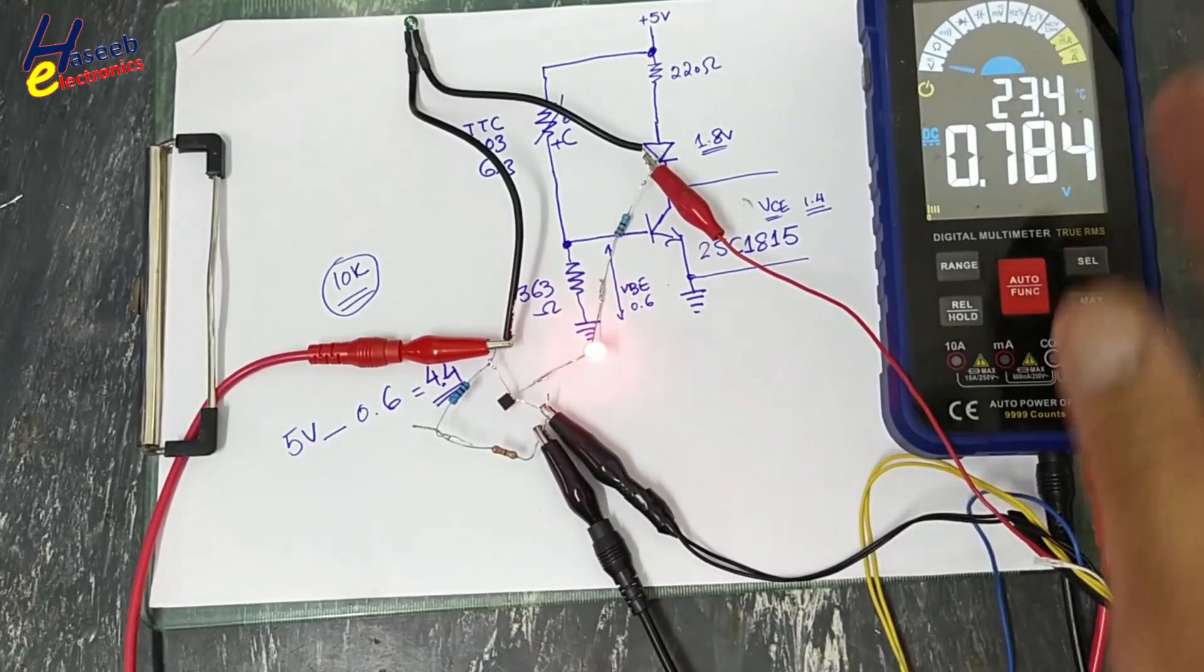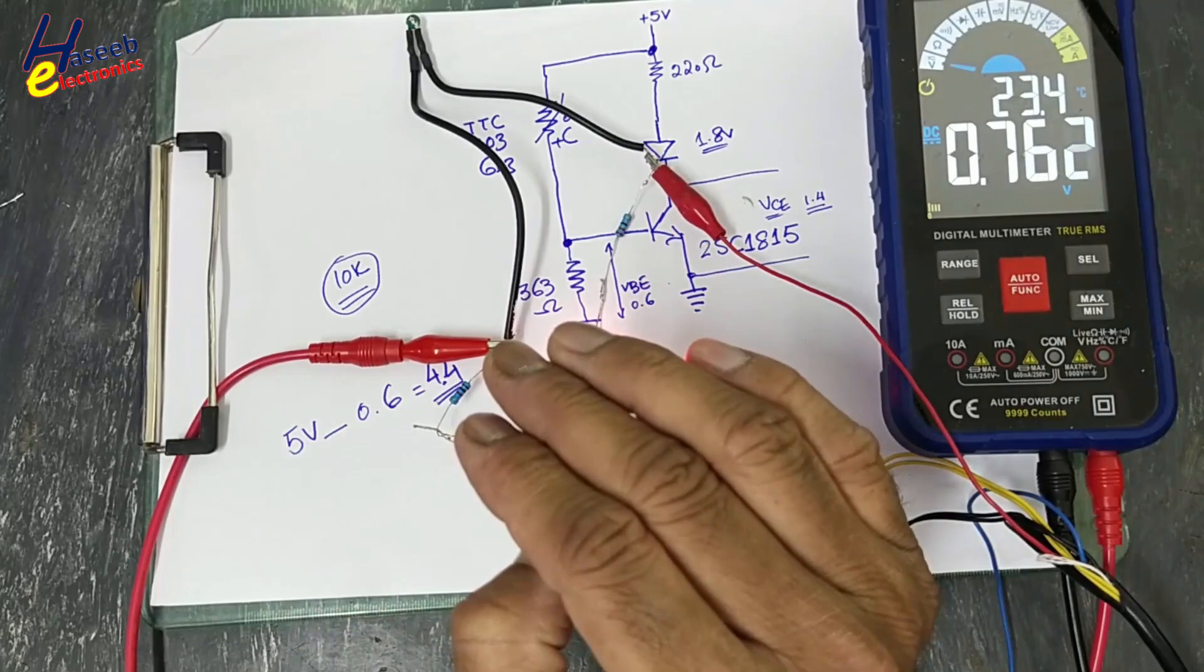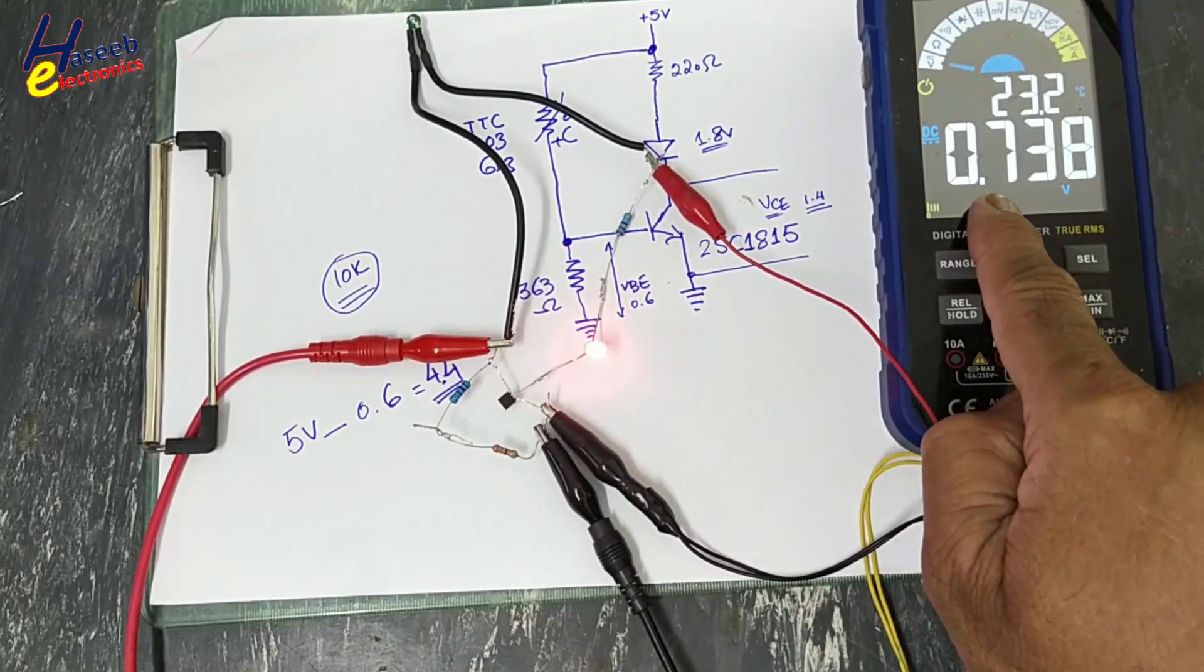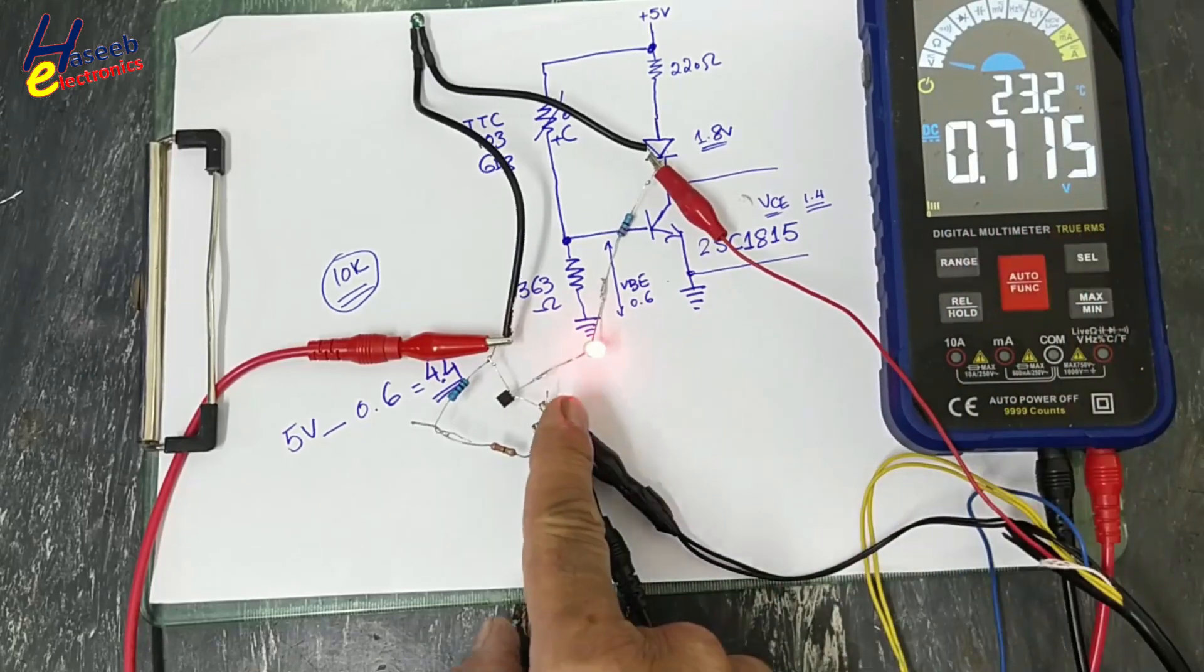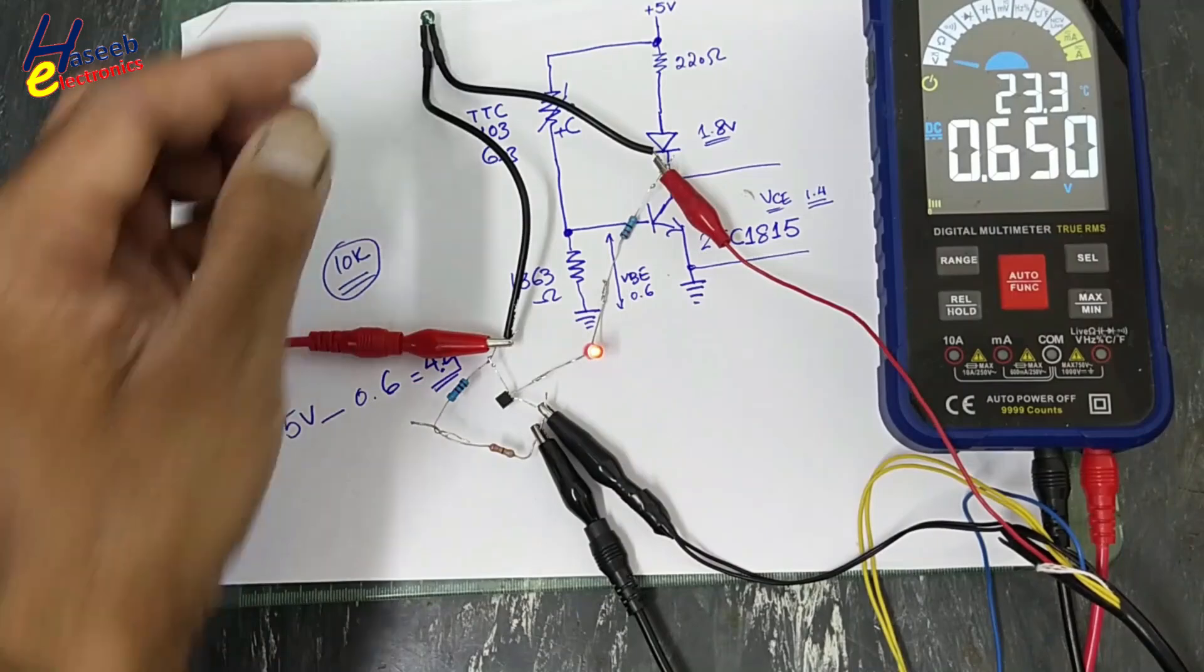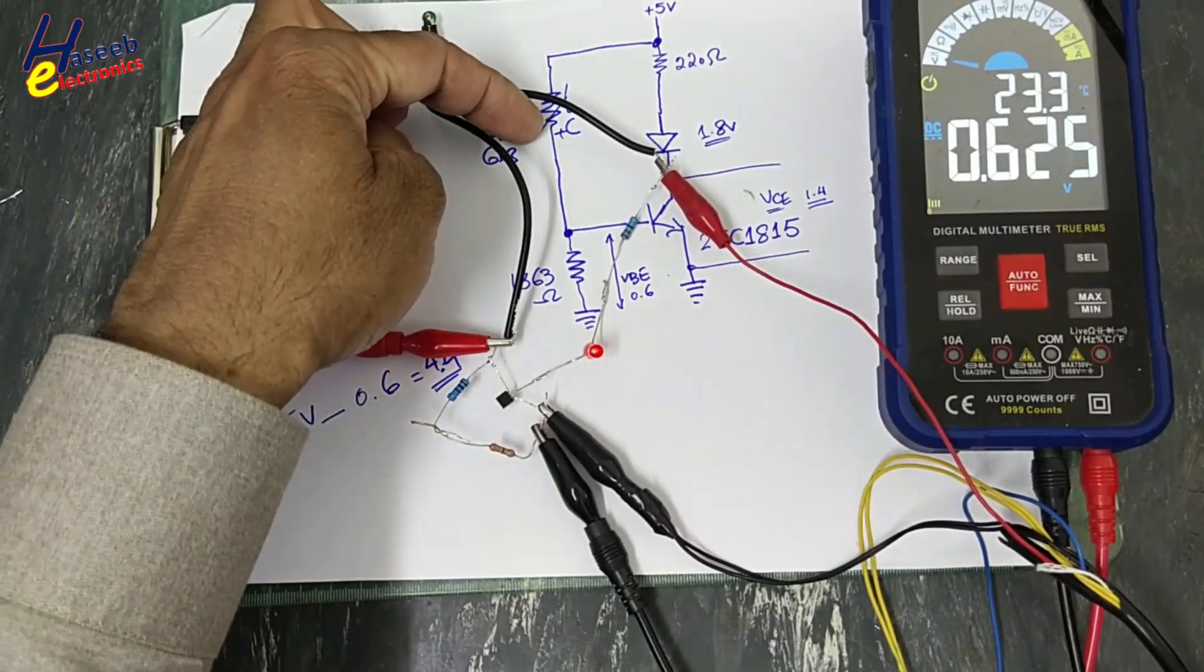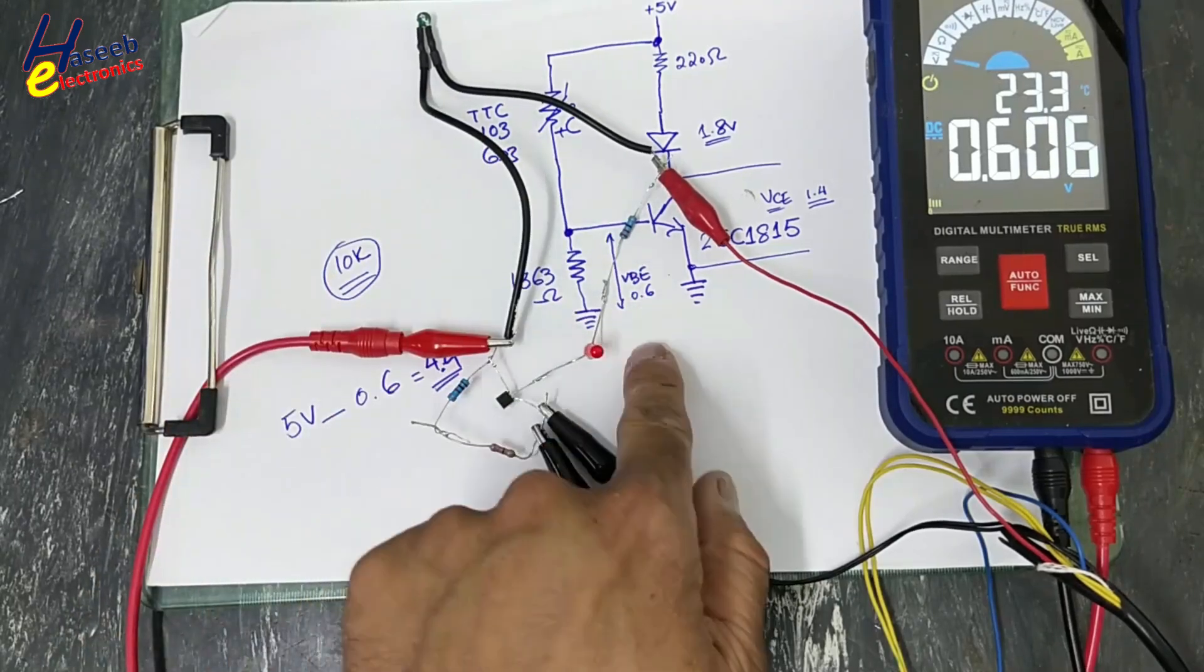But if you want to turn on this LED at a specific temperature limit... This time 0.7 volts, 0.72 volts, and LED is full bright. When temperature returns back to normal at ambient temperature, its resistance will increase so that the voltage VBE will decrease.